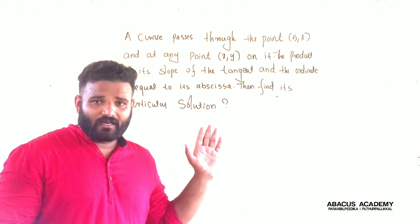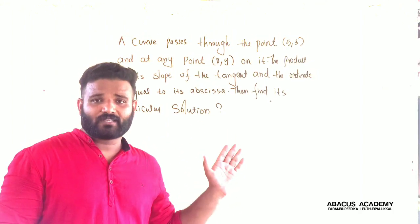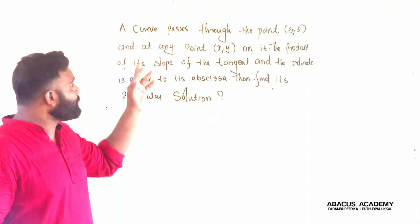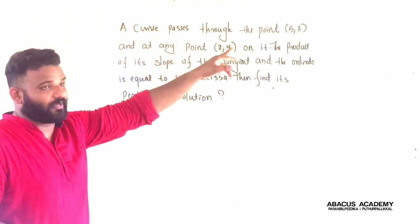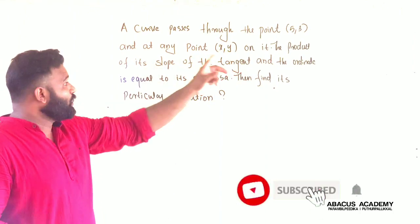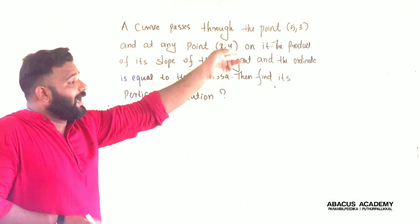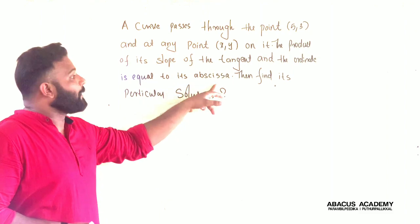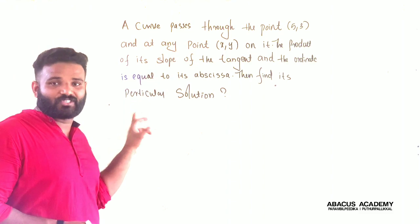Good morning, students. The next question is a differential equation. The question is: a curve passing through the point (5, 3), and at any point x, y on it, the product of the slope of the tangent and the y-coordinate is equal to its x-coordinate. Find its particular solution.